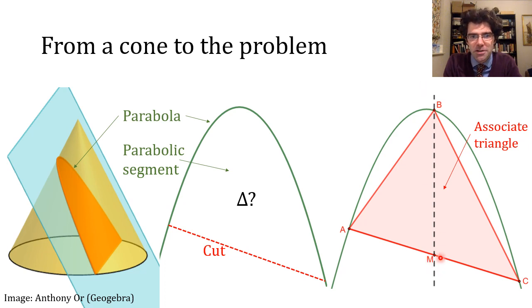We go to the midpoint M, proceed straight up until we hit the parabola at B. That's the associate triangle, and Archimedes proves that the area of a parabolic segment is always four-thirds of the area of its associate triangle. An incredibly elegant result, typical of Archimedes to come up with something so neat.